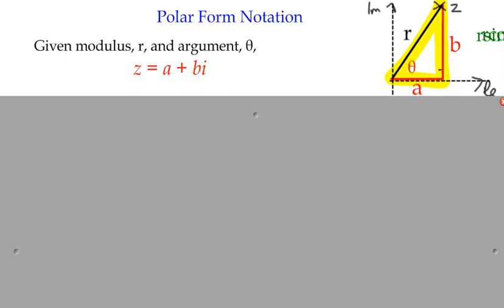We have a right-angle triangle, so we can form relationships between A and B and r and theta. Going back to right-angled trigonometry, B and r in terms of angle theta are opposite and hypotenuse. So sine of theta is opposite over hypotenuse, and multiplying both sides by r gives us r sine theta equals B. Similarly, A and r give us adjacent over hypotenuse, so cos theta equals A over r, giving r cos theta equals A. There's a connection between our polar and Cartesian forms.